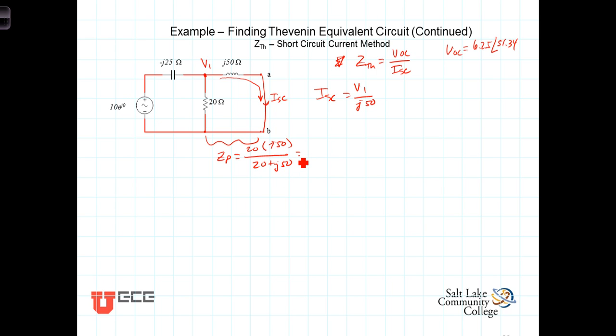So this circuit then reduces down to our source here of 10 angle zero, the minus J25 capacitor, and then we've got this equivalent parallel impedance Zp, and V1, the voltage that we're looking for, is that voltage there. So these two are in series with each other, so we can get V1 using a voltage divider.